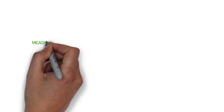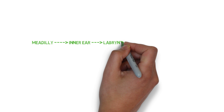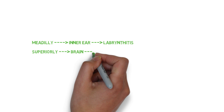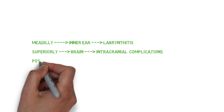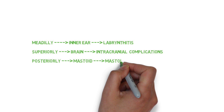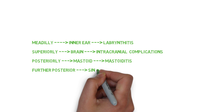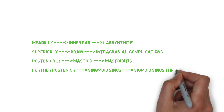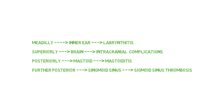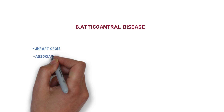Let's move toward atticoantral disease. In this disease, the infection can spread to other areas. Medially, it can spread to the inner ear and cause labyrinthitis. Superiorly, there is the brain, so it may cause intracranial complications. Posteriorly, there is the mastoid, so it may cause mastoid disease. Further posteriorly, there is the sigmoid sinus, so it may cause sigmoid sinus thrombosis. Because this infection can spread to other areas, it is called the unsafe type — also called unsafe chronic suppurative otitis media.